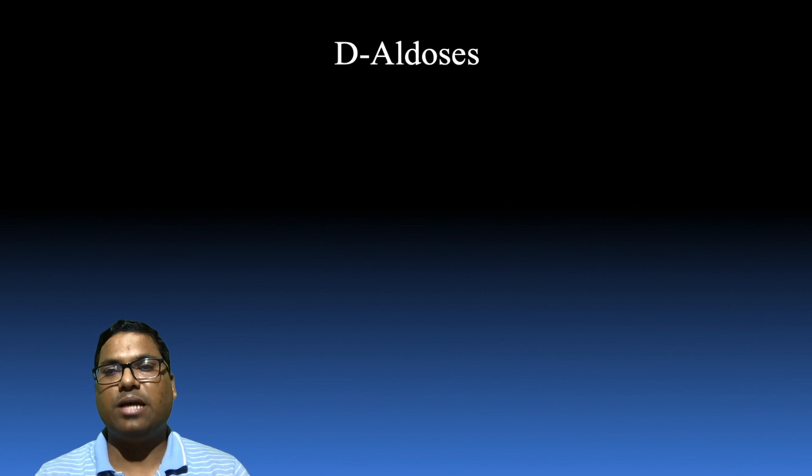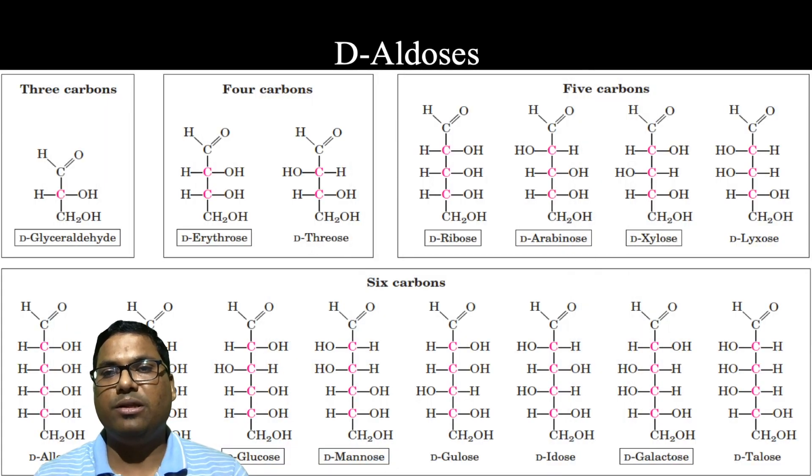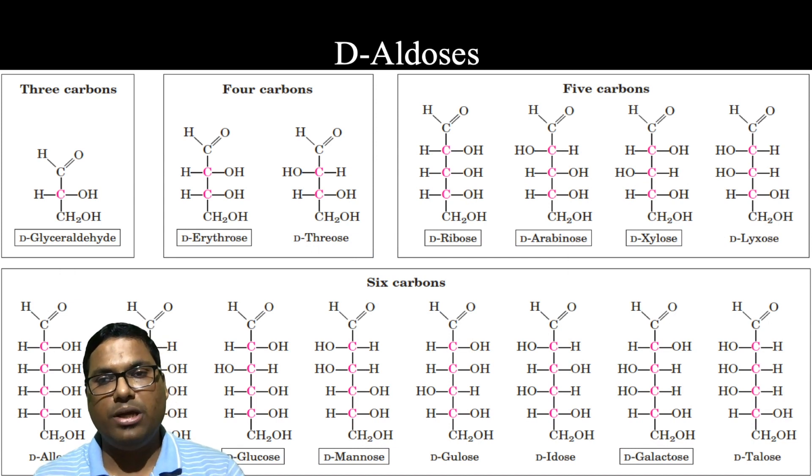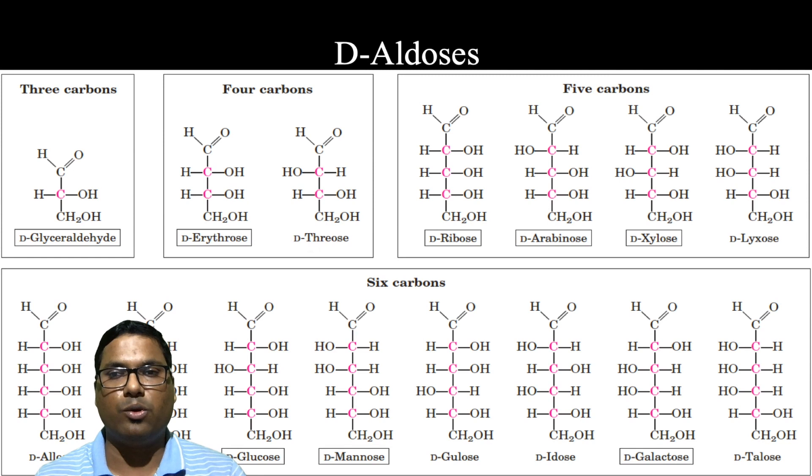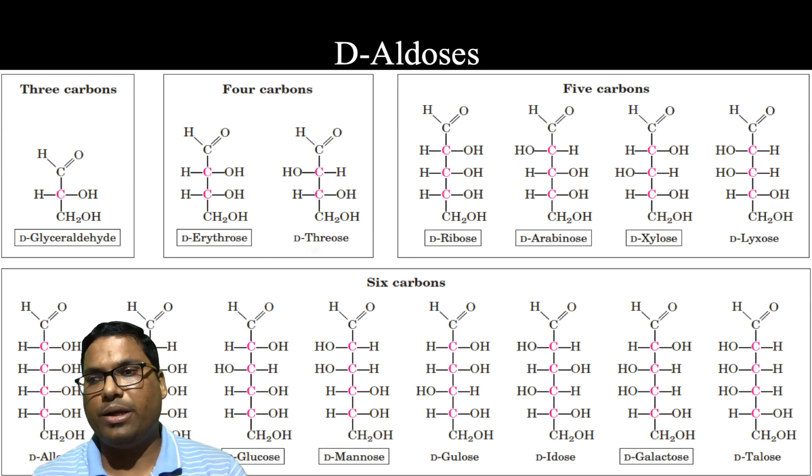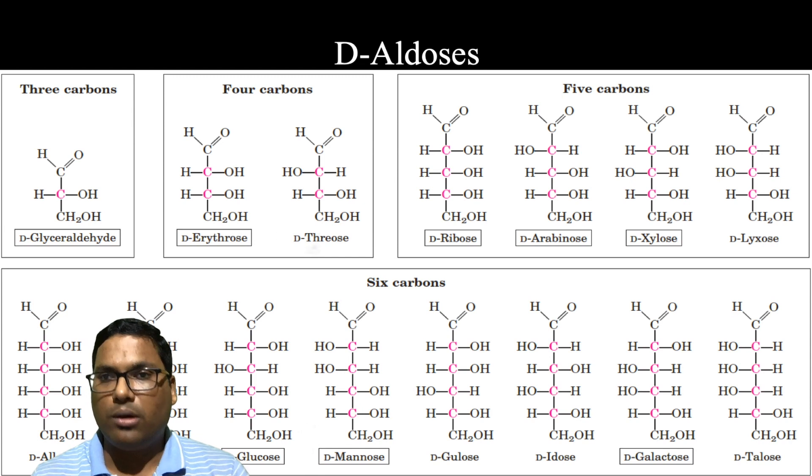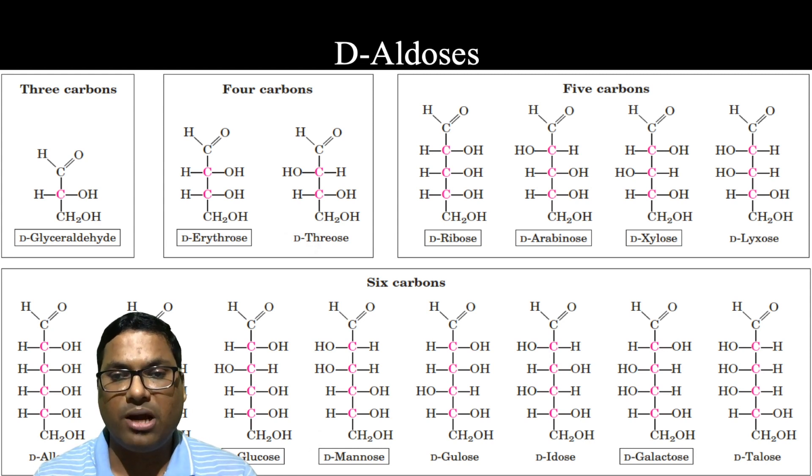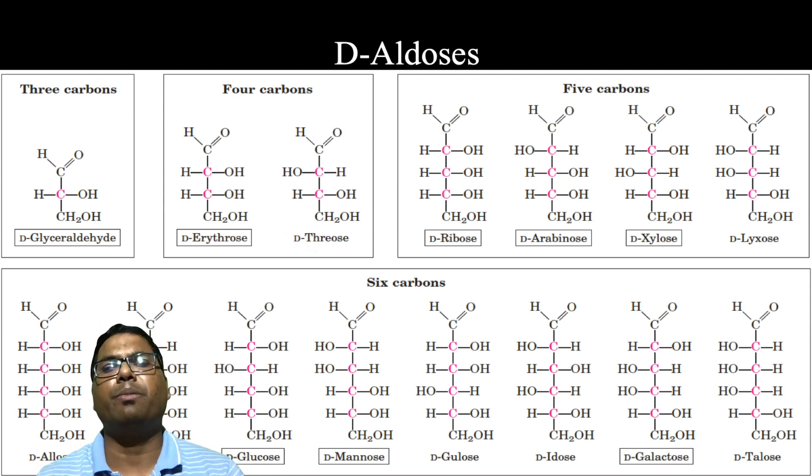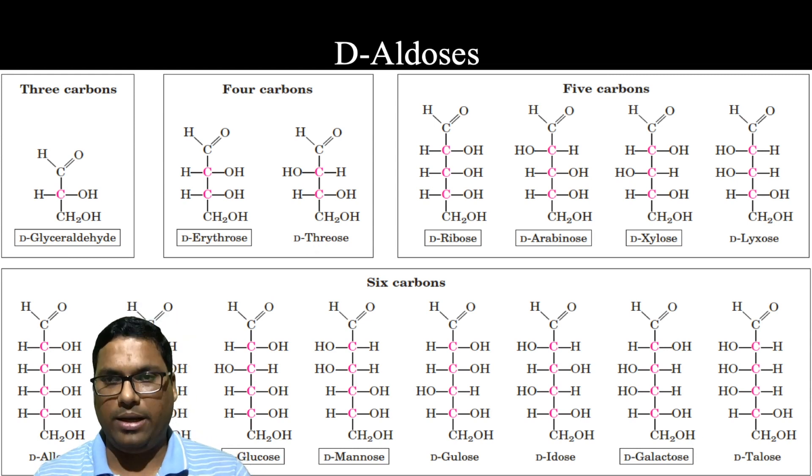Now let us see the examples of aldoses. Now as we have seen in the table earlier, we are observing the examples starting from three carbon, four carbon, five carbon, and six carbon over here. Let us see the very important three carbon sugar, D-glyceraldehyde, then four carbon, then we have erythrose and threose, while in case of five carbon we have ribose, we have arabinose, xylose, and lyxose, while in case of six carbon there are many examples but the most prominent being glucose, mannose, and galactose.